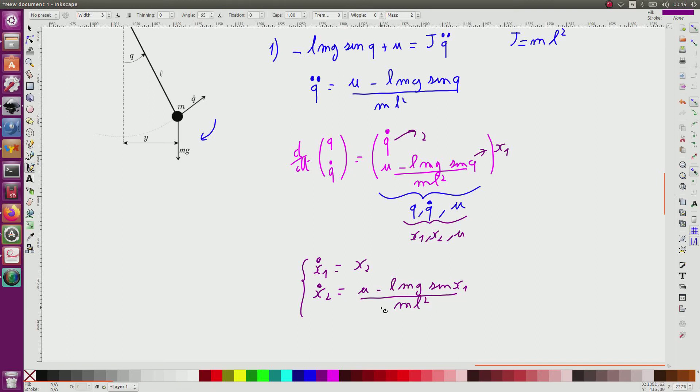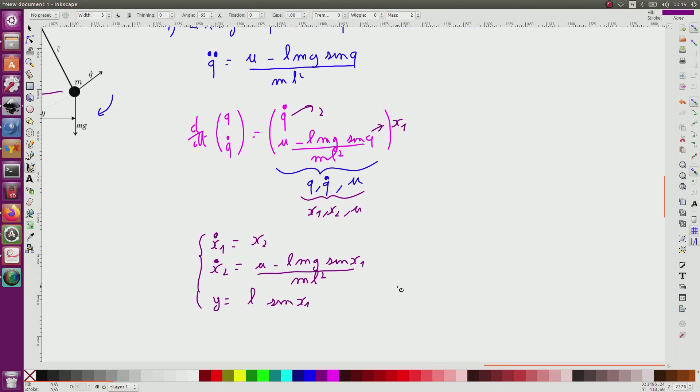And also, since Y has to be expressed as a function of the state, I can see here that I have Y is proportional to the sine of Q, so sine of X1, and also to L.